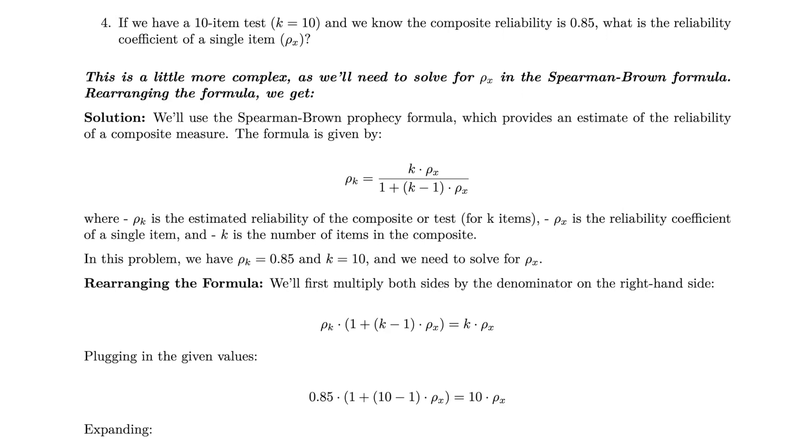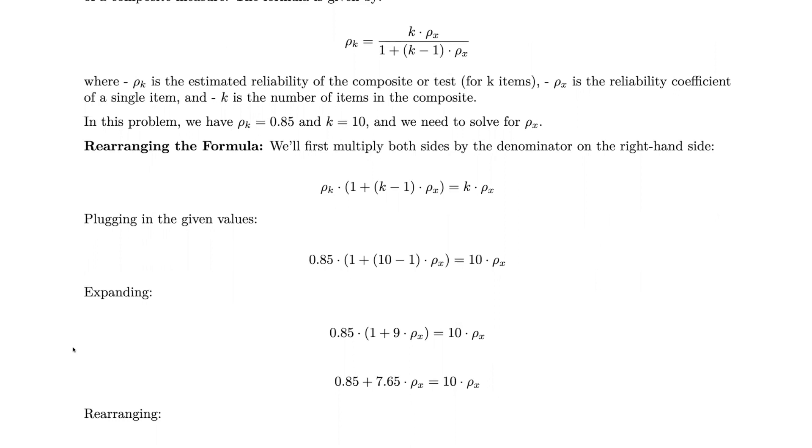Step two, we're going to multiply both sides by the denominator. That's going to turn into 0.85 times the sum of 1 and the product of 9 and ρₓ, which is ultimately going to give us 10 times ρₓ. When we expand, we're going to get 0.85 plus the product of 7.65 and ρₓ, which is equal to 10 times ρₓ.